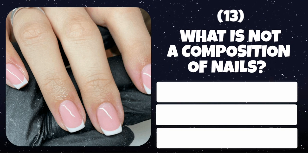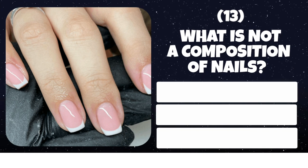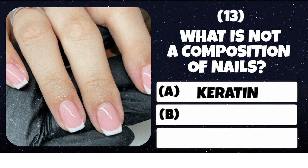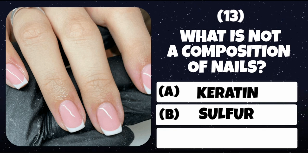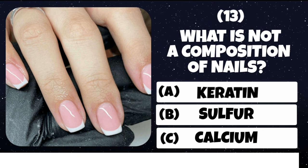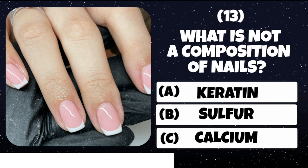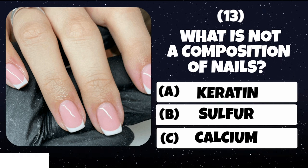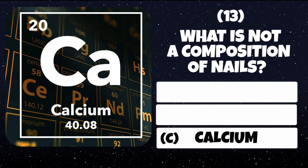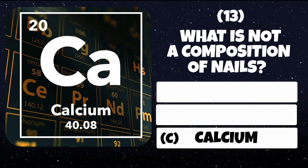Question number 13. What is not a composition of nails? Option A: Keratin. Option B: Sulfur. Option C: Calcium. Correct answer is Calcium.